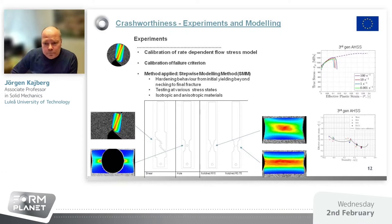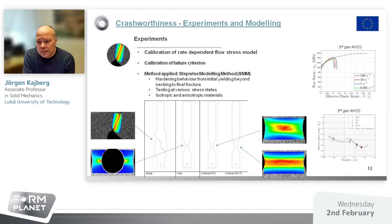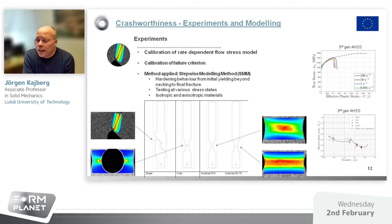Looking at the calibration experiments, a rate-dependent flow stress model is needed. With the step-wise model method, we use different specimen geometries, and by using different specimen geometries you achieve different states of stress. This method is also based on digital image correlation. What you get in the end are flow stress curves from initial yielding up to final fracture — in one example, the failure strain became around 0.4 for a certain geometry. You also get data to calibrate a failure criterion, with failure strains at different triaxialities.